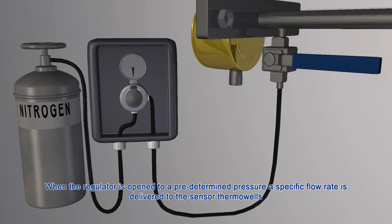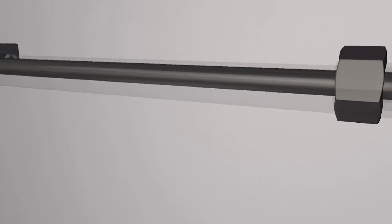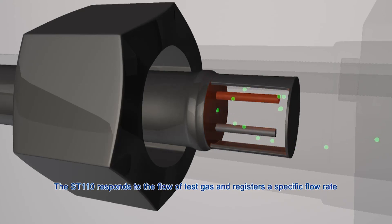When the regulator is open to a predetermined pressure, a specific flow rate is delivered to the sensor thermal wells through a sonic nozzle. The ST110 responds to the flow of test gas and registers a specific flow rate.